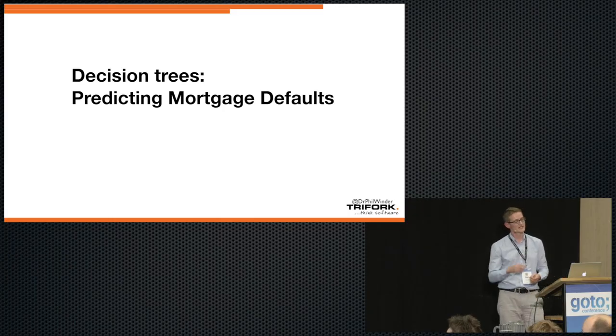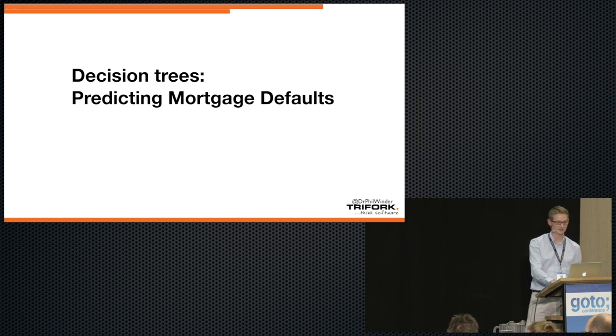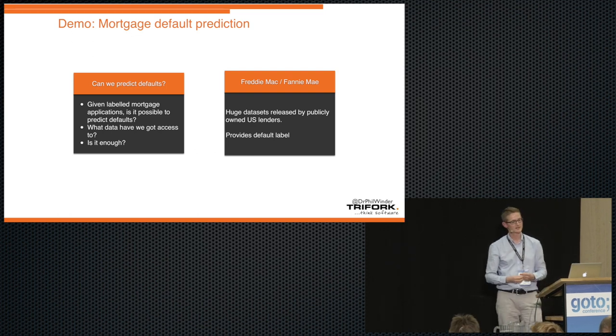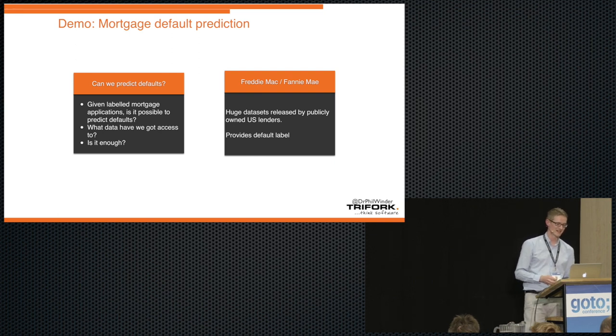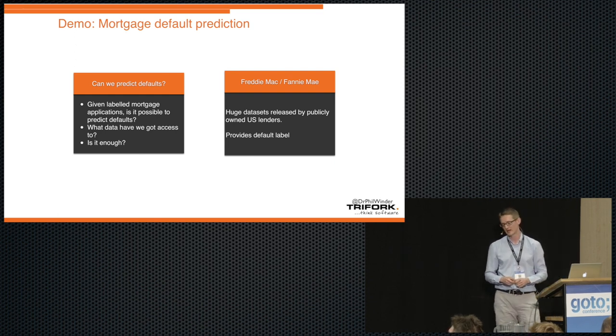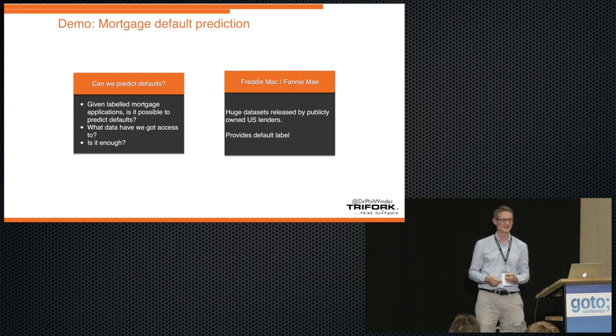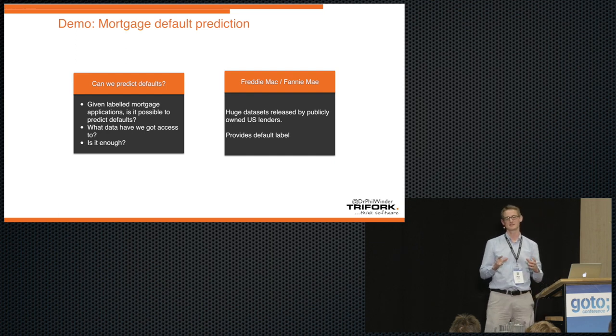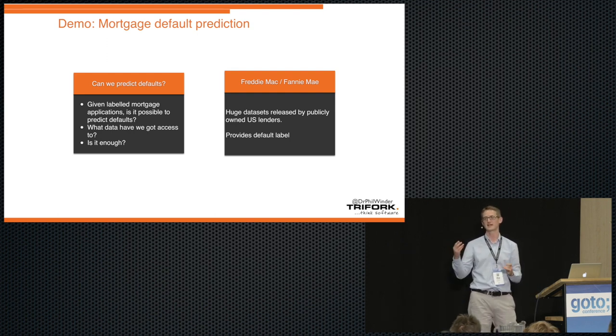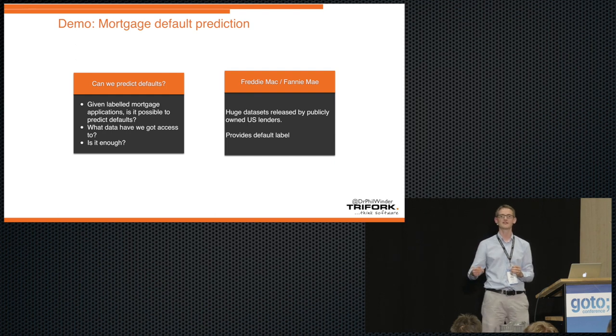Okay, so next example, decision trees. So this is an example of decision tree that we showed earlier on. And this is predicting mortgage defaults. So amazingly, two mortgage providers in the US went bust, as usual, and were bailed out by the US taxpayer, owned by the US government. So Freddie Mac and Fannie Mae, and as part of their reprisal basically, a slap on the wrist, the government forced them to release lots of their data to the public. And amazingly, they publicized a whole data set of mortgage applications, and also historical accounts of what happened to those mortgage applications. So you can say that they told us whether that person then defaulted in the future. So the task here is given some data, is it possible to predict whether that person is going to default?